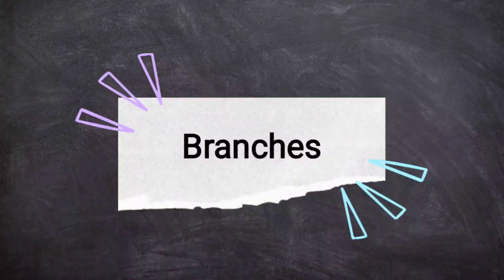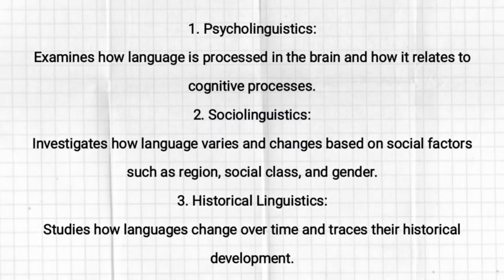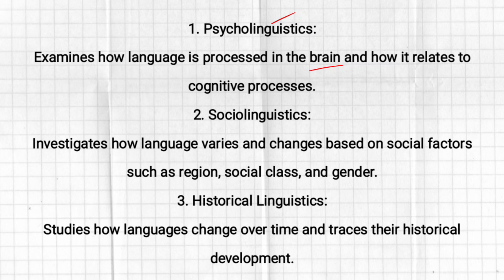Now we have the branches of linguistics. The first branch is psycholinguistics. Psycholinguistics examines how language is processed in the brain and how it relates to cognitive processes. So in psycholinguistics, we talk about how languages are processed in the brain.